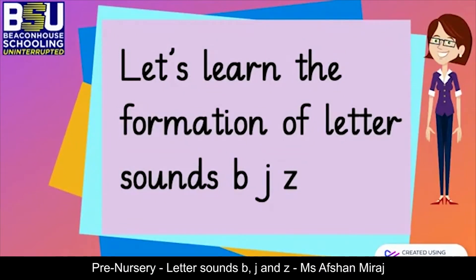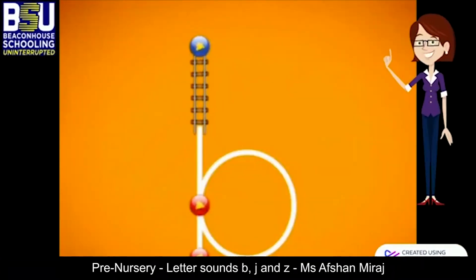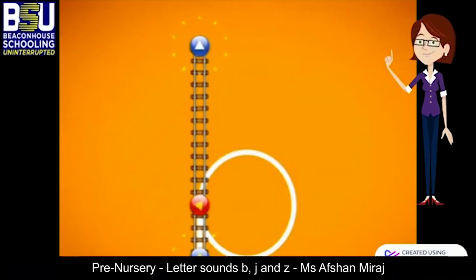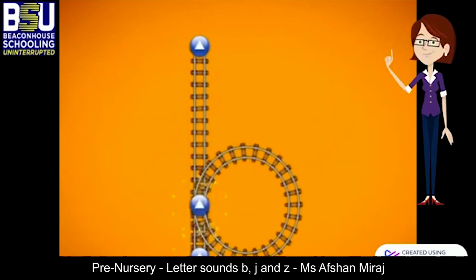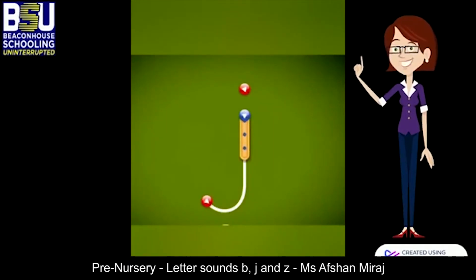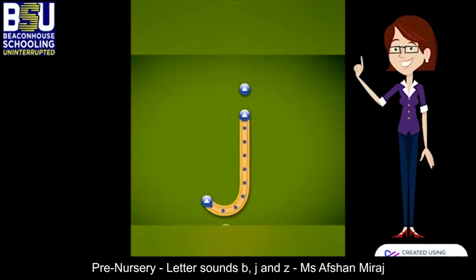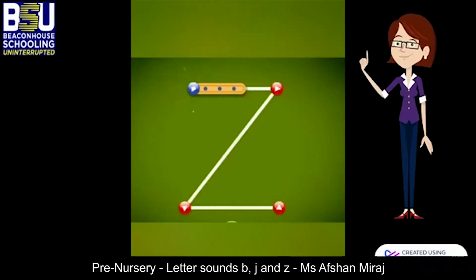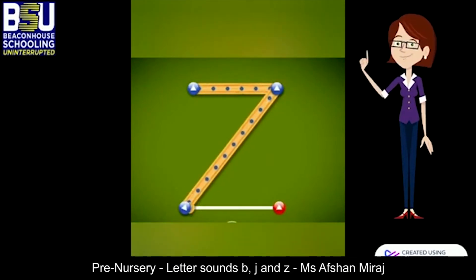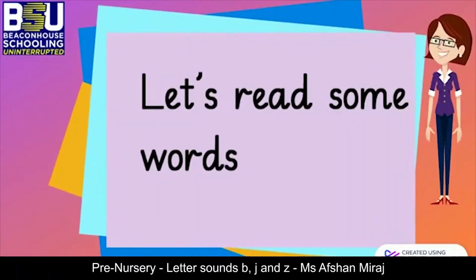Let's learn the formation of sounds B, J, and Z. For B: start at the top, bring the line all the way down to the bottom, then go to the middle and curve all the way around. For J: start in the middle, draw a line down, then curl it at the bottom, and make a small dot above the middle. For Z: start in the middle, make a line across to the right, next make a line down to the left, then make one more line across to the right.